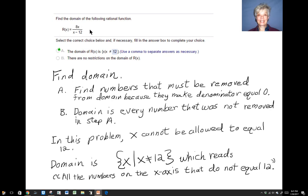Let's look at this problem from your homework. R of x, that's what they're calling the function, rational function, equals 8x over x minus 12. This is what we need to do to find the domain, and here's their answer. I'm going to explain what that means.